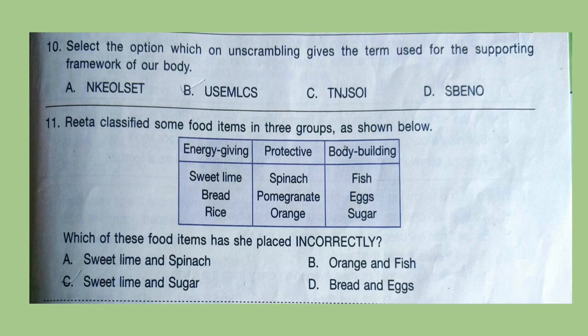Question 10: Select the option which on unscrambling gives the term used for the supporting framework of our body. You can also write down your answer in the comment section. Correct answer is option A — Skeleton. Question 11: Rita classified some food items in three groups: energy giving, protecting, and body building foods. Which of these food items has she placed incorrectly? Correct answer is option C — sweet lime should not be in energy giving, and sugar should not be in body building.